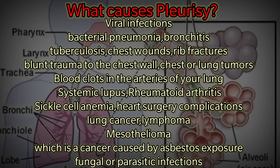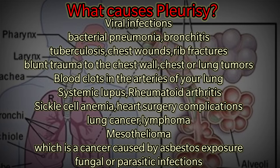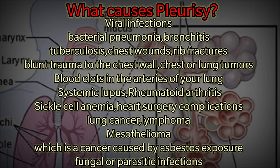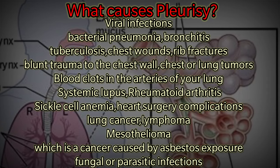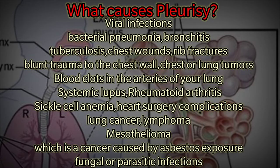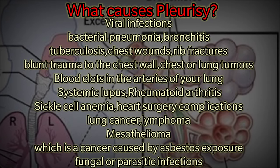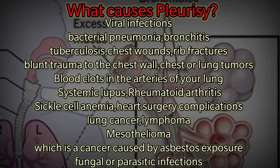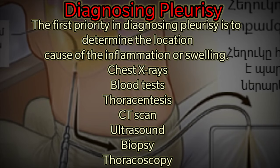What causes pleurisy? Viral infections are the most common cause. Other causes include bacterial pneumonia, bronchitis, tuberculosis, chest wounds, rib fractures, trauma to the chest wall, chest or lung tumors, blood clots in the arteries of your lungs (also called pulmonary emboli), immune system disorders such as systemic lupus and rheumatoid arthritis, sickle cell anemia, heart surgery complications, lung cancer, lymphoma, asbestos exposure, and fungal or parasitic infections.